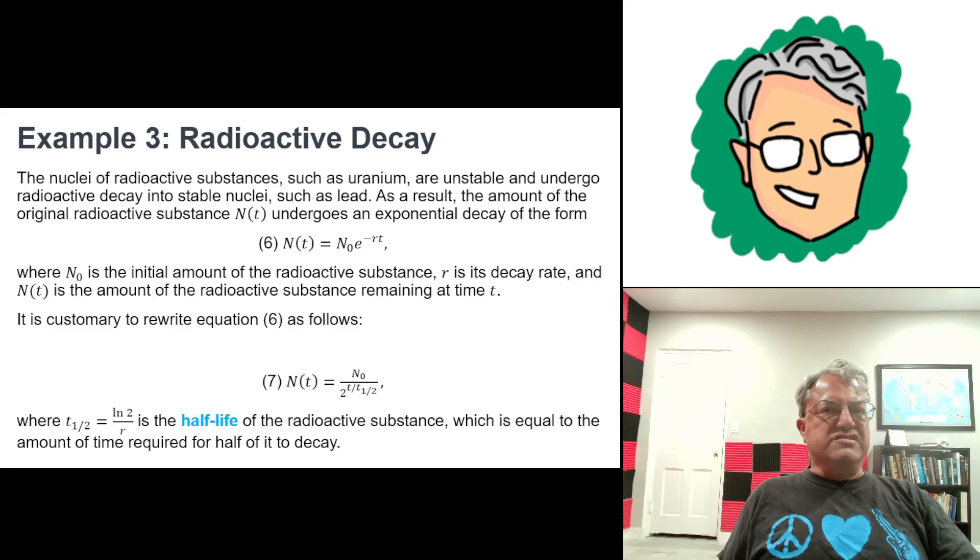And we can write the equation for it in two different ways. We can say N(t), that's the number, the amount, and I guess you could write that as the number of atoms or the weight or mass of the radioactive substance after time t. That's just equal to the initial amount, which we call N₀ times e^(-Rt), where R is the decay rate.